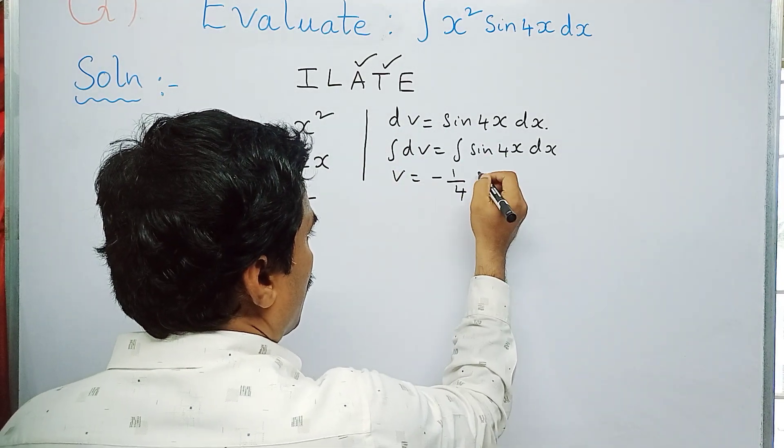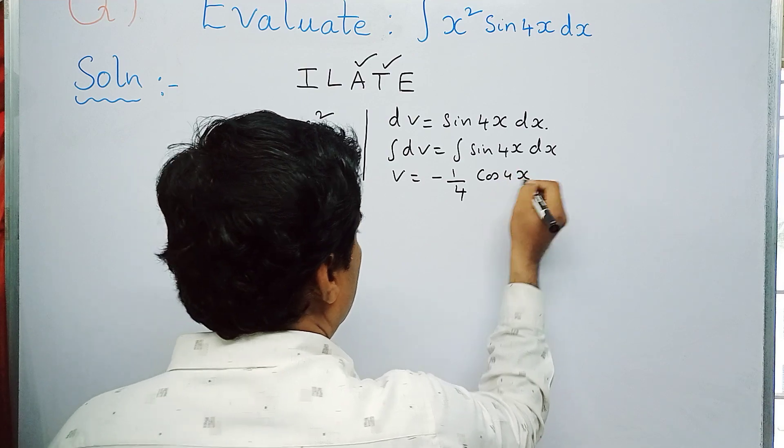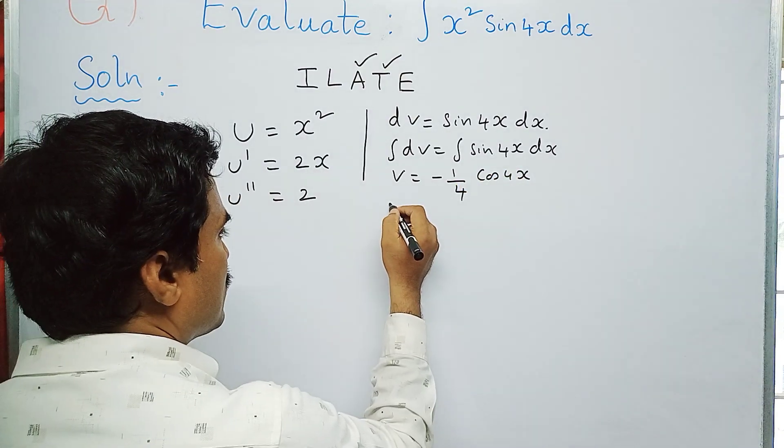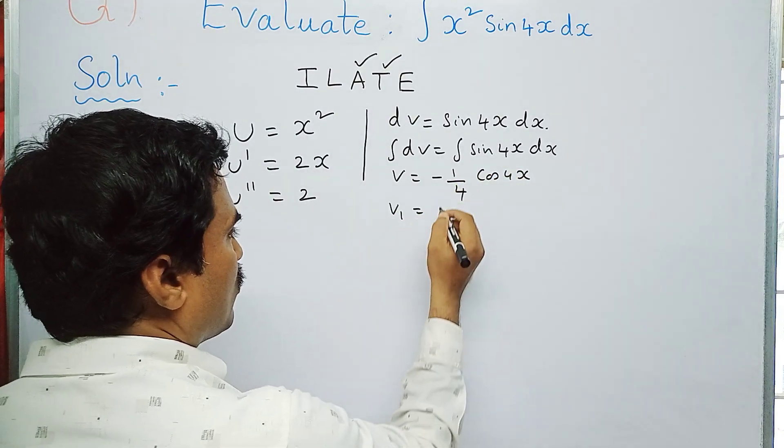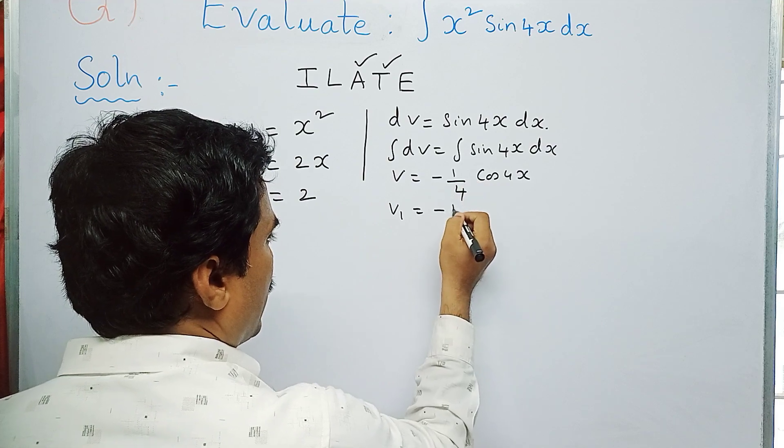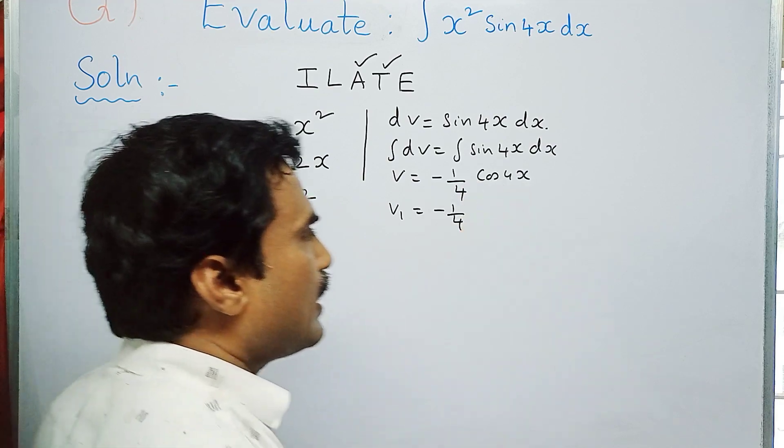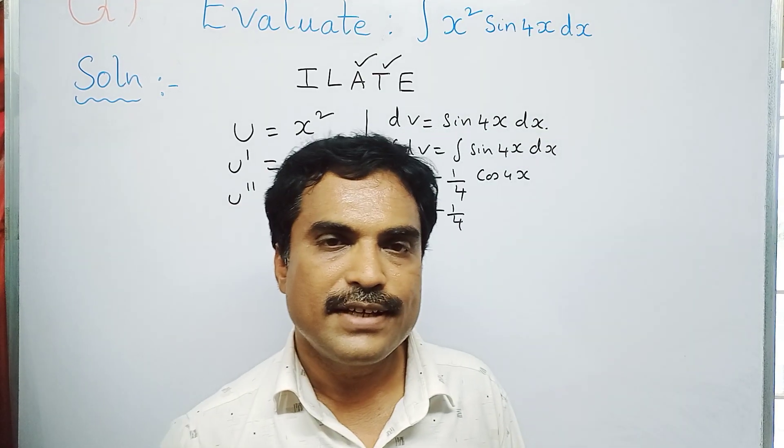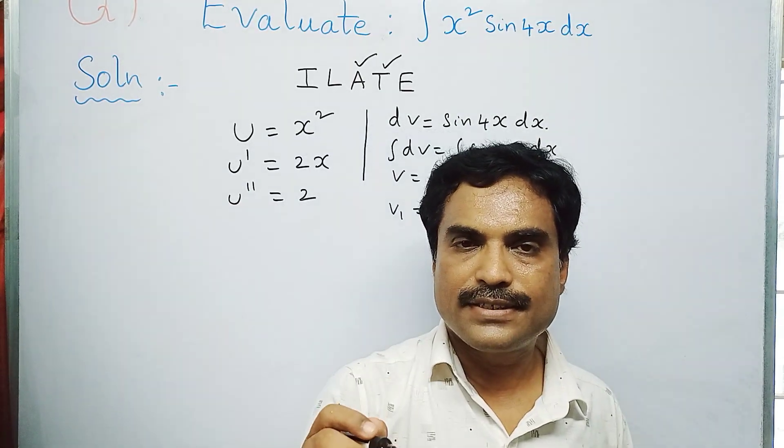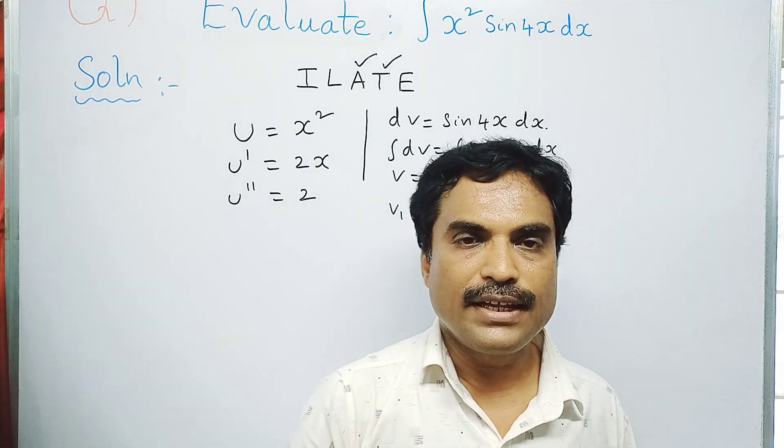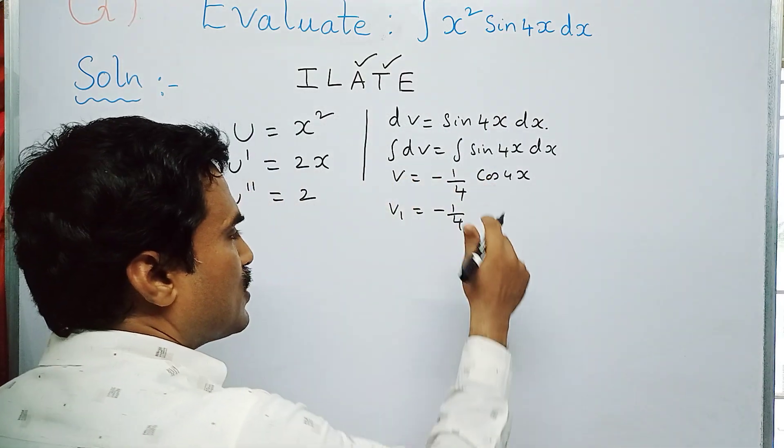So here a is 4, so you can write this as minus 1 by 4 cos 4x. Again integrate on both sides, so this will become v1, that is equal to—already here minus is there—so minus 1 by 4. Now integral cos 4x, again apply that integral cos ax dx formula, that is integral cos ax dx is 1 by a sin ax.